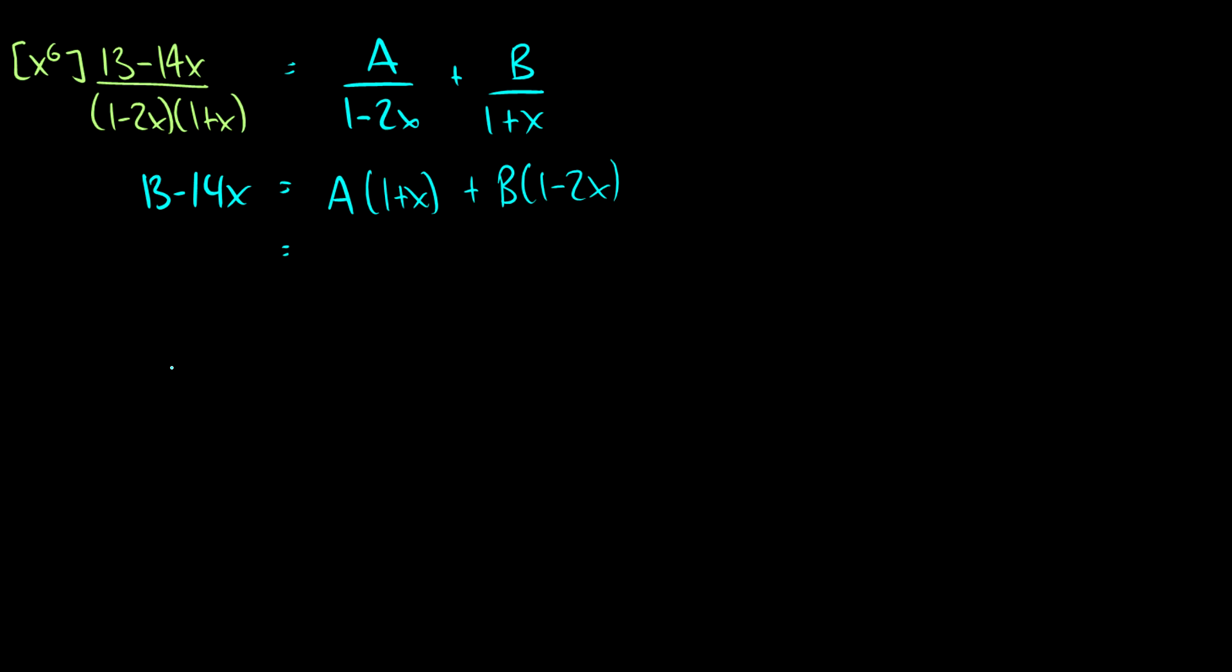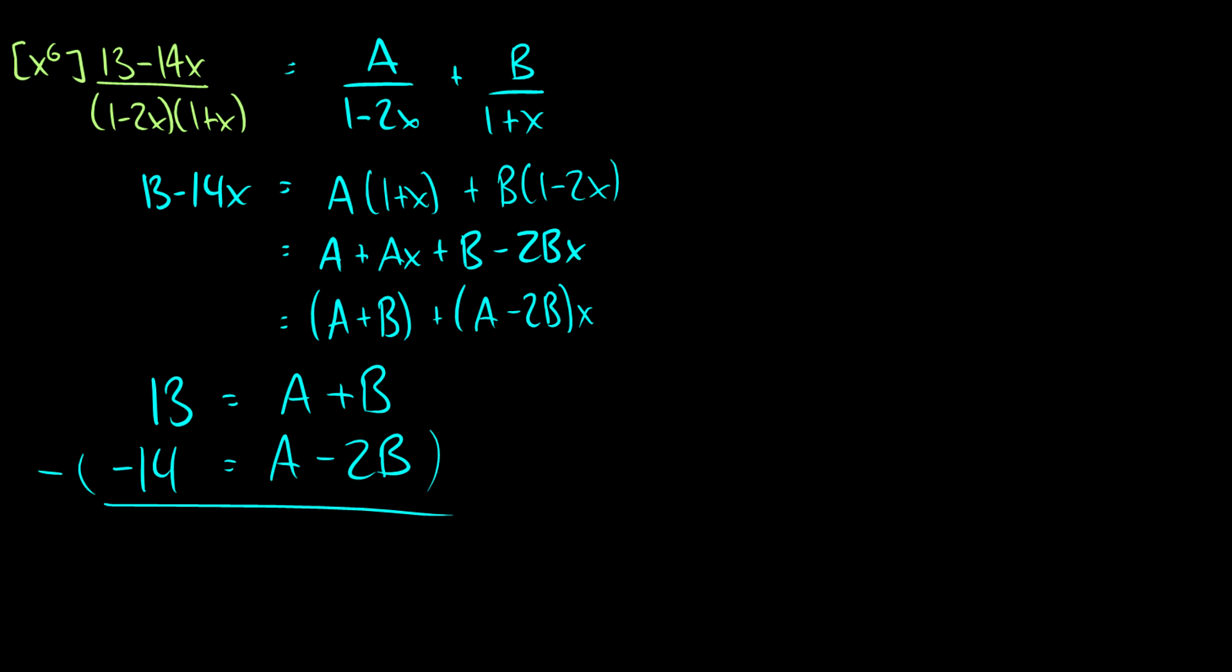So we have 13 minus 14x equals A times 1 plus x plus B times 1 minus 2x. So I'm going to expand this out. This is A plus Ax plus B minus 2Bx. So we know that 13 has to equal A plus B and negative 14 has to equal A minus 2B. So what we'll do is subtract this bottom equation so that we can eliminate the A's. So we're going to get 27 equals 3B. So we know that B is going to equal 9, which means that A must equal 4.